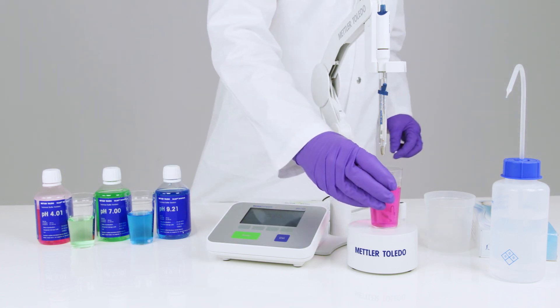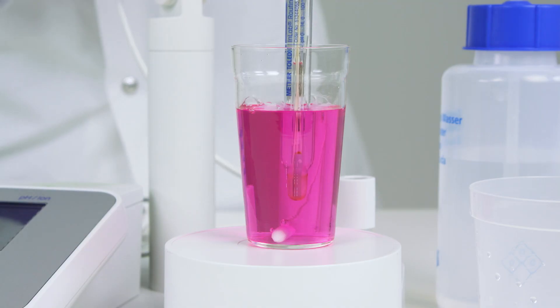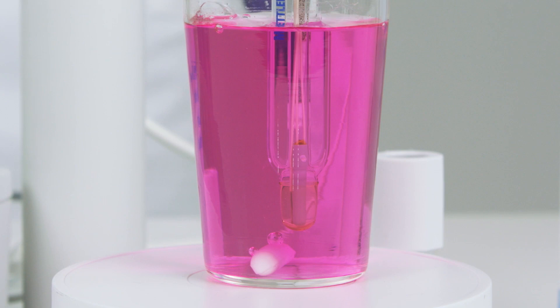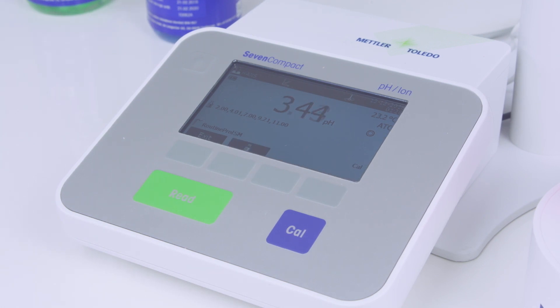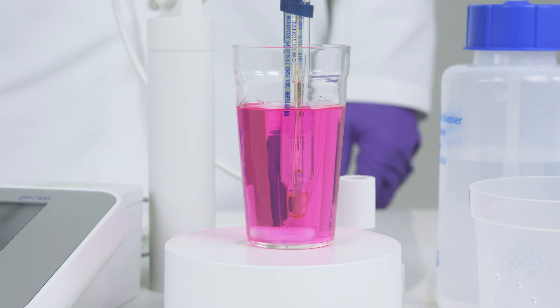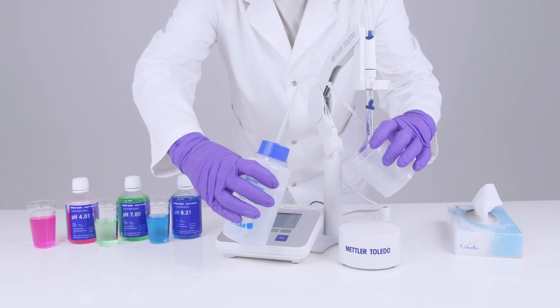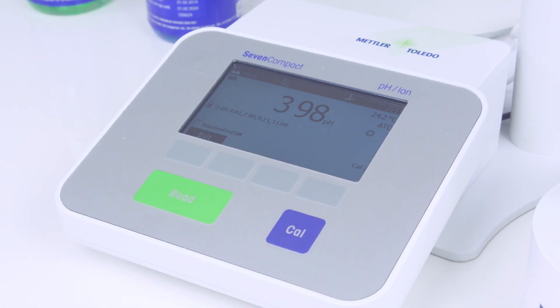Starting with the lowest value pH buffer, lower the sensor tip into the buffer until the diaphragm is fully immersed. As a rule of thumb, the electrolyte inside the sensor should always be at a higher elevation than the sample solution when immersed. Now press Cal to start the calibration of the first point. You'll know when the calibration for this buffer is complete because the flashing A will change to A rooted. Now you can remove the buffer, clean the sensor like before and either save the result or press Cal to continue the multi-point calibration.